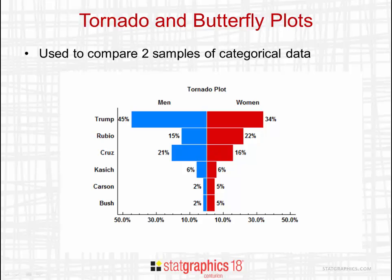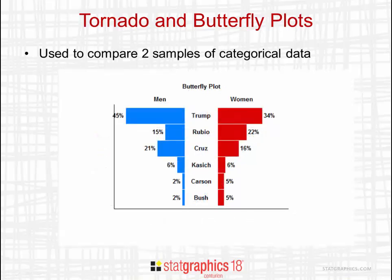As an example, you see the results of a poll taken during the 2016 Presidential Republican Primary. You can see from the plot that a larger percentage of men preferred Trump than did women, whereas a larger percentage of women preferred Rubio than did men. A butterfly plot is very similar to a tornado plot, except that the labels for the categories are put between the two sets of bars.